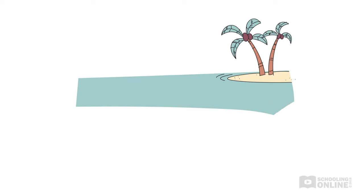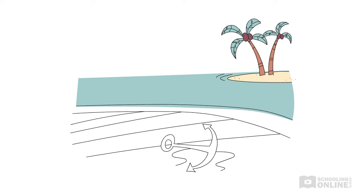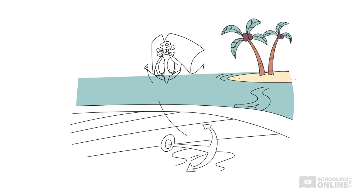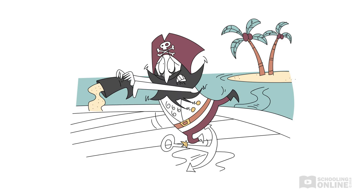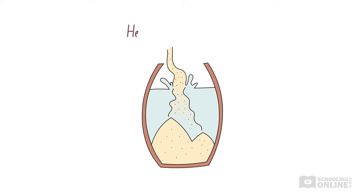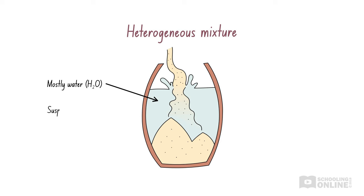Let's revisit Blackbeard and his pirate ship. He's just sailed away from the island where he buried his treasure. Blackbeard lost his balance and tipped his boot full of sand into the last barrel of clean water. If we look inside the barrel, we can see a mixture of liquid water and solid sand. This is a mixture of two pure substances. Water is a compound made of hydrogen and oxygen atoms, while sand is a compound made of silicon and oxygen atoms.